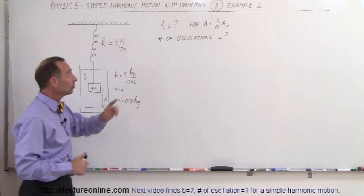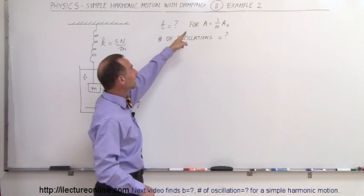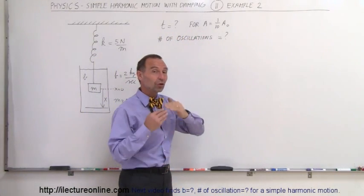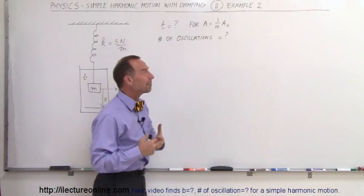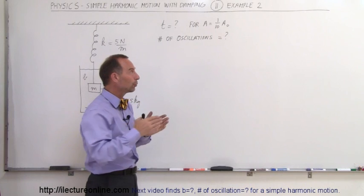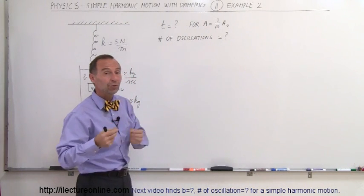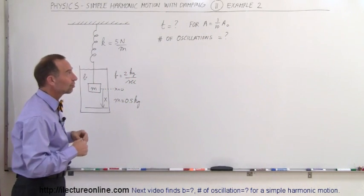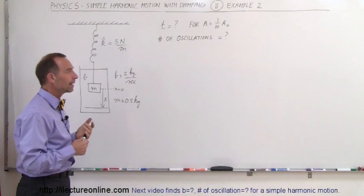In this case, the question is, how long will it take for the amplitude of the oscillations to go down to 1 tenth what they were initially at time equals 0? And then finally, how do we do that?